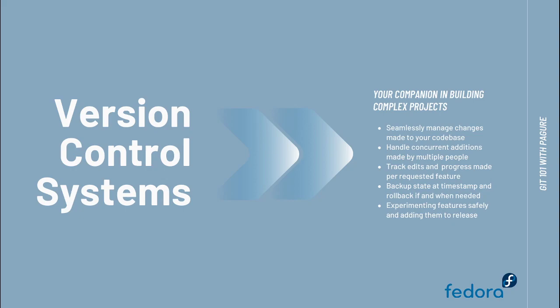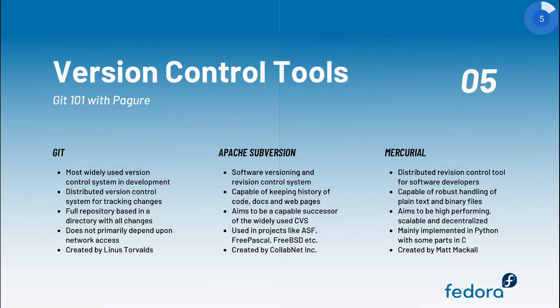If you want to experiment with new features, you can do so with the help of branches. Version control systems help you alleviate the issues you might come across when you try to collaborate while developing, making it your companion in building complex projects. Now that we have understood how version control systems can be of great help, let us move on to see the tools we can use. On your screen you have three of the most widely used version control tools. Starting with Git, created by Linus Torvalds for handling the development of the Linux kernel, it has now grown to be the most widely used version control system in development.